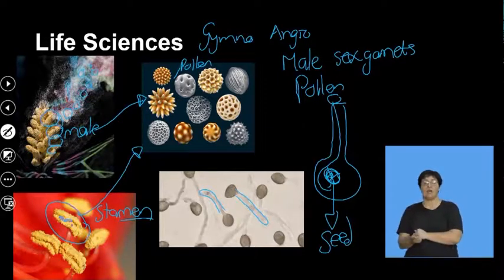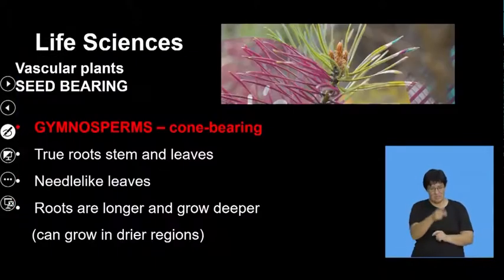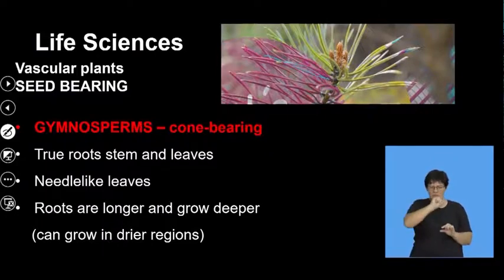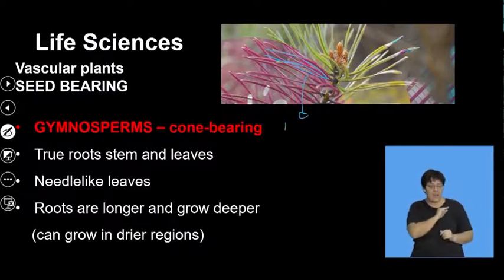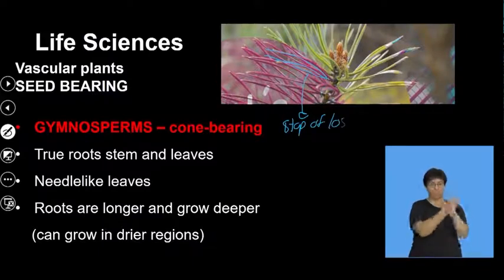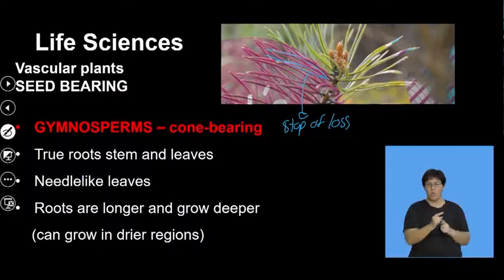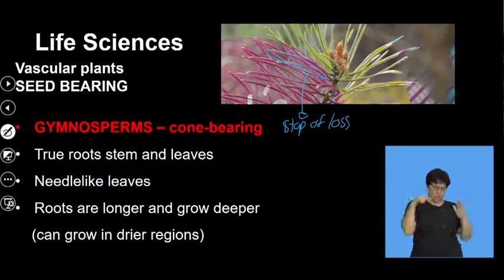Looking at gymnosperms: here are the pine needles and pine cones. Notice those nice thin green leaves — they're thin to stop water loss. The thinner the leaf, the less water I lose, because I live on land and I don't want to lose water. So my leaves are nice and thin and I lose less water.